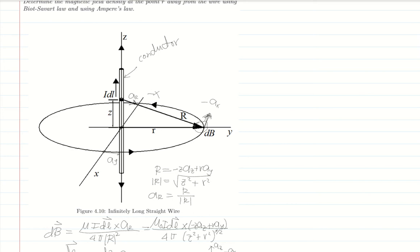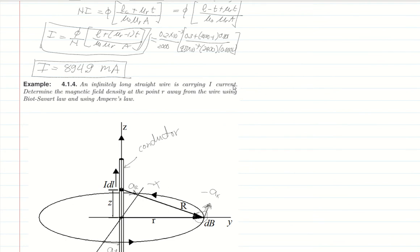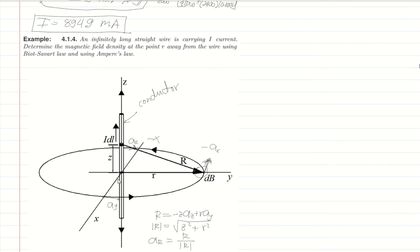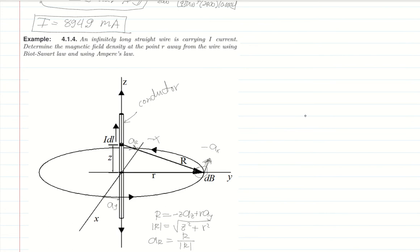This is a continuation of our discussion in chapter 4. Last discussion, we stopped at the infinitely long straight line. We solved the magnetic field at a distance around a conductor carrying a current I using Biot-Savart law. Now let's solve that again, but this time instead of using Biot-Savart law, we will use Ampere's law to solve for the magnetic field density using a different method.